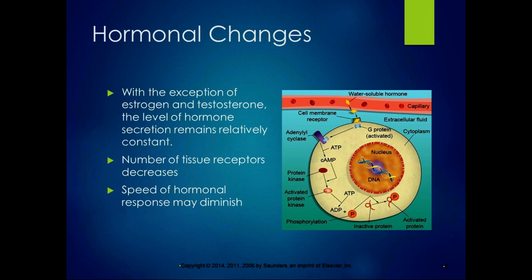With aging, you get hormonal changes. With the exception of estrogen and testosterone, which fade out as we get older, the level of hormone secretion remains relatively constant. What changes is the number of tissue receptors decreases, so the speed of hormonal response may diminish. With reduced receptors, we won't have the same response to hormonal signals from the endocrine system, and that changes how our body heals and responds to things.